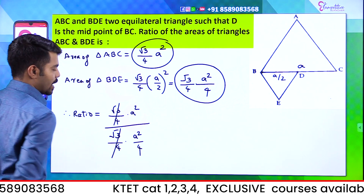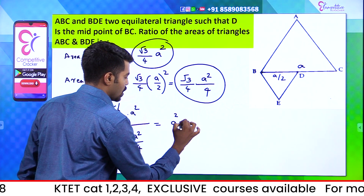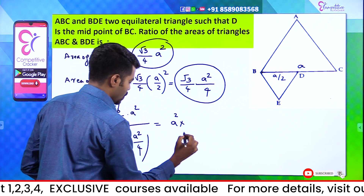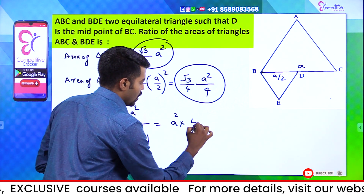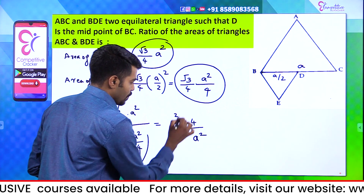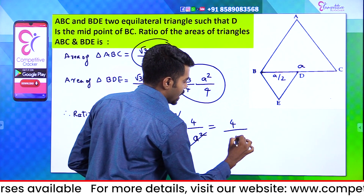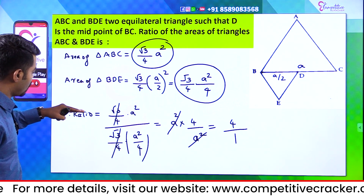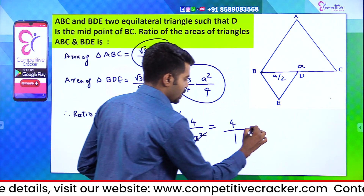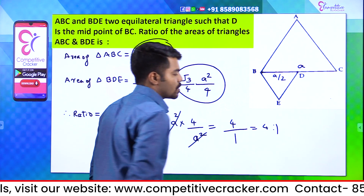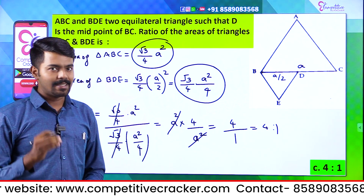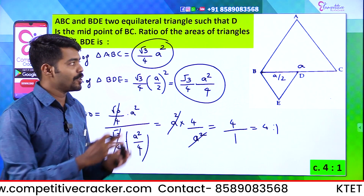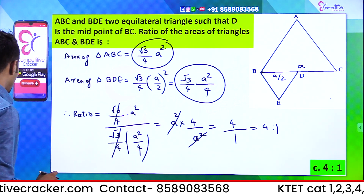Therefore, the ratio is equal to (√3/4·A²) divided by (√3/4·A²/4). We cancel A square — so we get 4 divided by 1, that is 4 is to 1. That is Option C, 4 is to 1 is the correct answer. Very important — let's go to the next step.